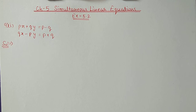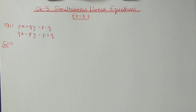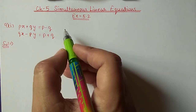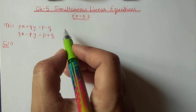Hello students. We are doing chapter number 5, simultaneous linear equations, exercise 5.2. Till question number 8 we have already done. Today we are doing from question number 9, first part: Px plus Qy equal to P minus Q, and Qx minus Py equal to P plus Q. So if we multiply the first equation with P and the second equation with Q,